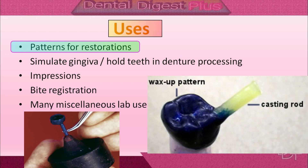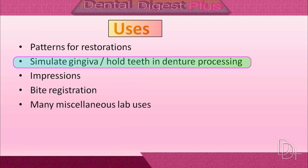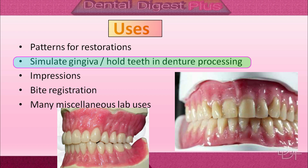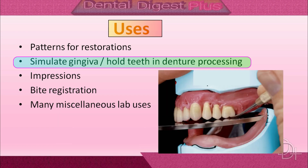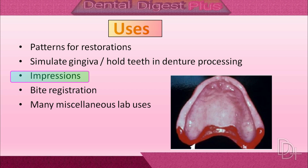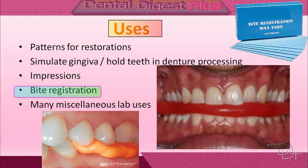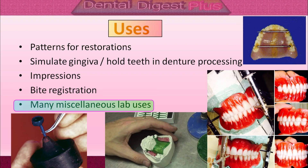Now let's see the uses of dental wax. Dental wax is used for making wax patterns for restorations. It is used to simulate gingiva during denture preparation, and for holding the teeth in a record base during denture processing. Dental wax is used for making impressions of the posterior palatal seal region, for bite registration during various procedures, and for many miscellaneous lab uses in various intermediate procedures.